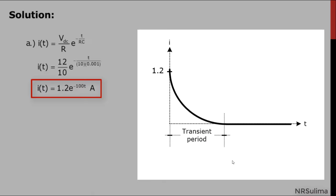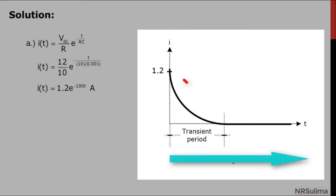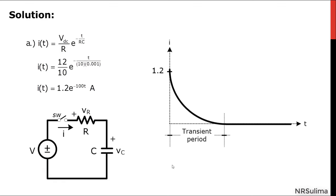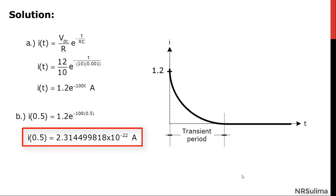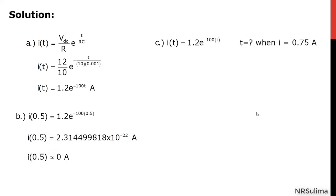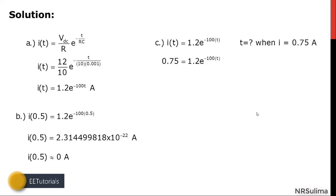As time increases, the current behaves in a declining fashion. The reason is that in a series RC circuit with a DC voltage source, once the switch is closed, eventually the capacitor will open, and the current decays to zero. For letter B, calculating the current at time equal to 0.5 second gives 2.31 times 10 to the negative 22, which is practically 0 ampere. For letter C, the time when the current equals 0.75 ampere is 4.7 milliseconds.